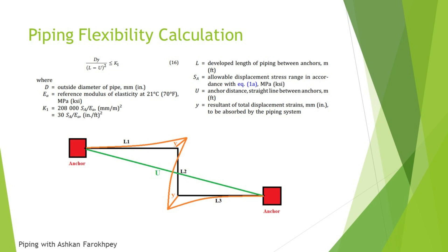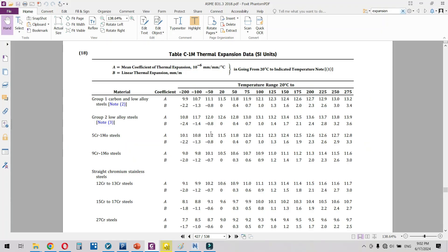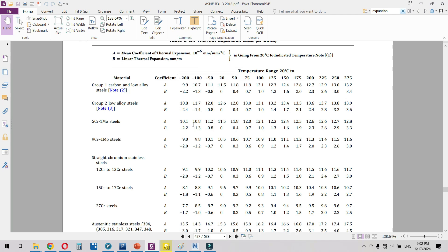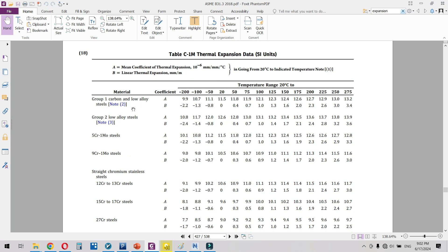Let's take a look at ASME B31.3 and let me show you the thermal expansion data in Table C1. As you can see in Table C1, we have the thermal expansion data of different materials, for example carbon and low alloy steels have different ranges of thermal expansion coefficient in different temperature ranges.